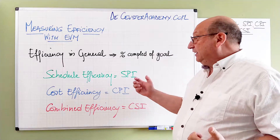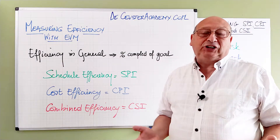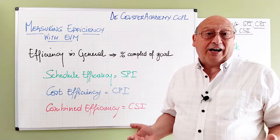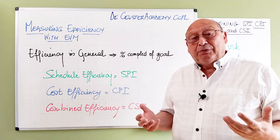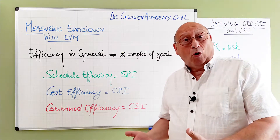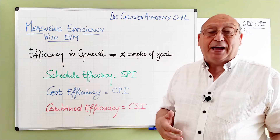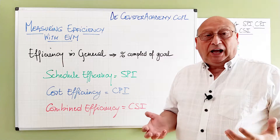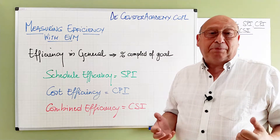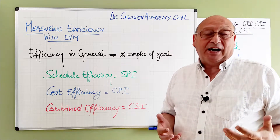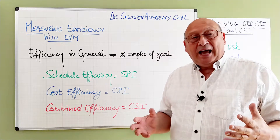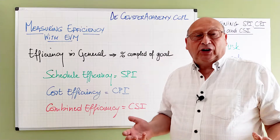The first efficiency parameter is the schedule efficiency, which means how efficient we are completing the deliverables compared to the baseline. The second parameter does the same thing, but here we are looking at how efficient we are using our money — are we paying more or less to do the deliverables? A last parameter described in this presentation is a combined parameter: the CSI, which combines the SPI and the CPI to give an overall performance of the project. We will look at these parameters one by one and finish with a simple exercise.